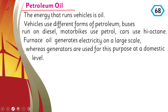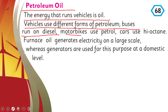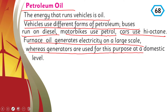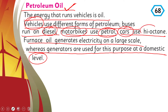The next form of energy is petroleum oil. The energy that runs vehicles is oil. Vehicles use different forms of petroleum — buses run on diesel, motorbikes use petrol, cars use high octane, and furnace oil generates electricity on a larger scale. Generators are used for electricity production at the domestic level.